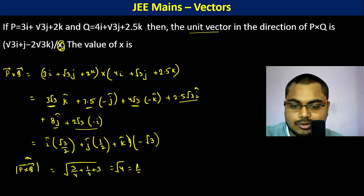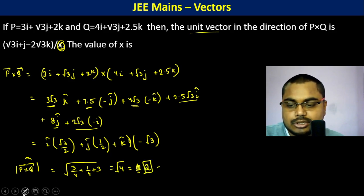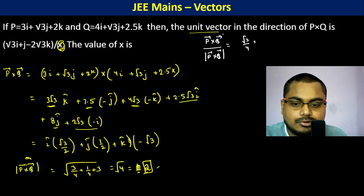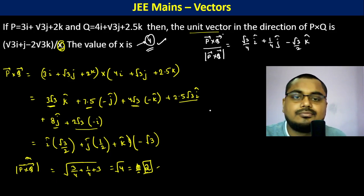So the unit vector in this direction is P cross Q divided by magnitude of P cross Q. So this becomes root 3 by 4 i cap plus 1 by 4 j cap minus root 3 by 2 k cap. Therefore, the value of x becomes 4. Thank you.